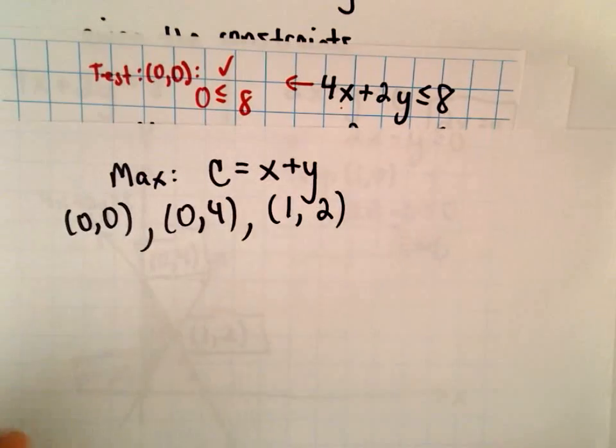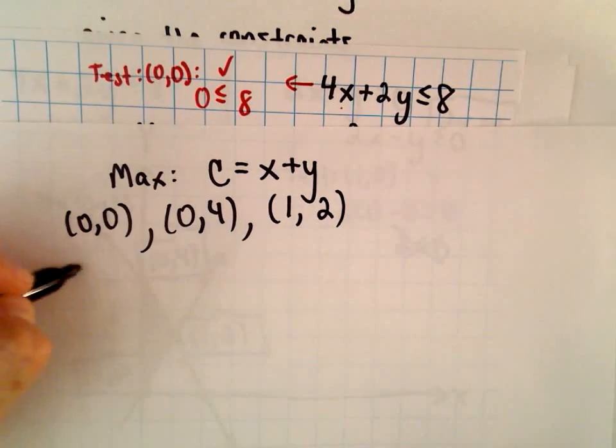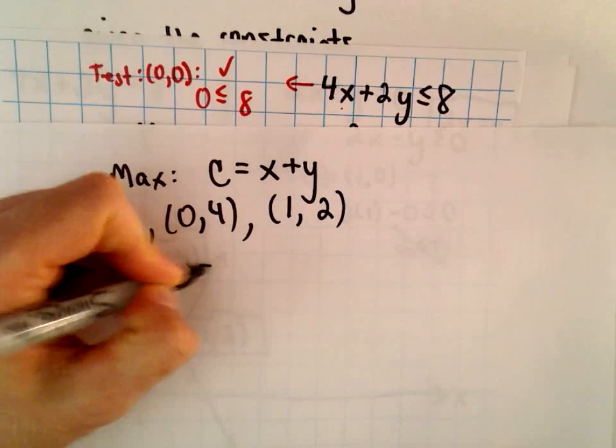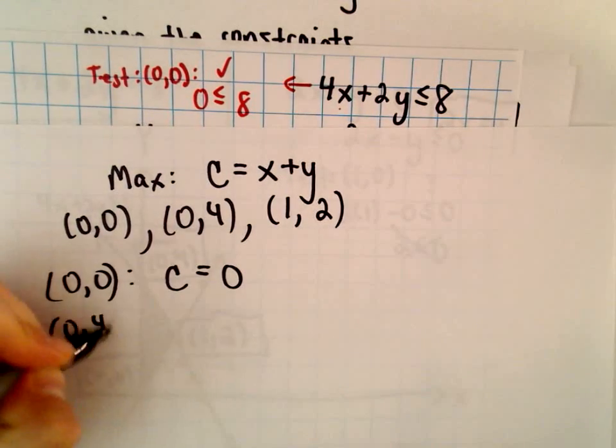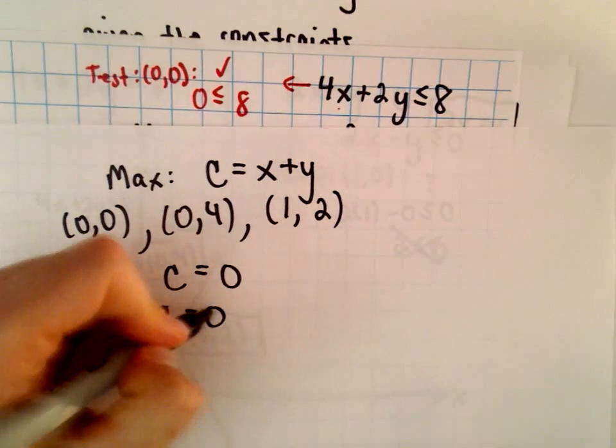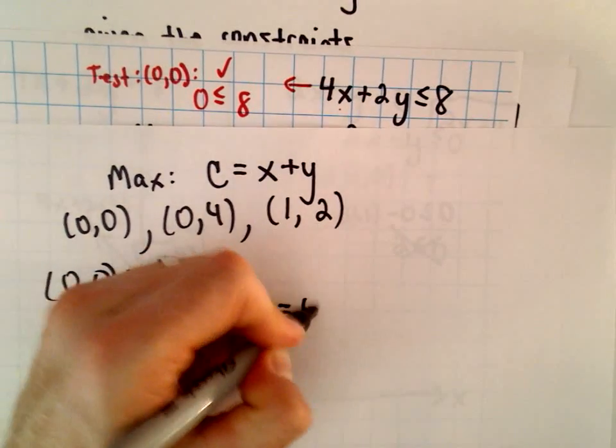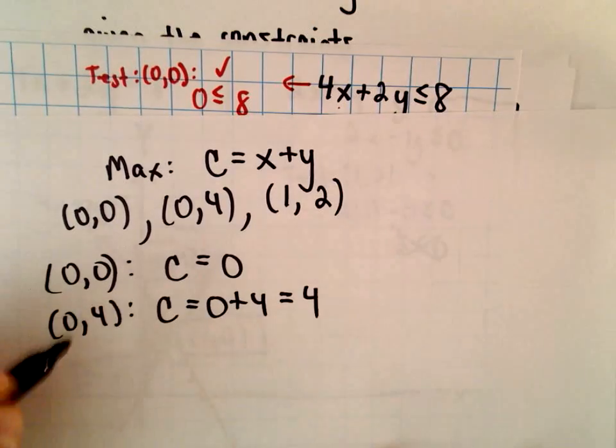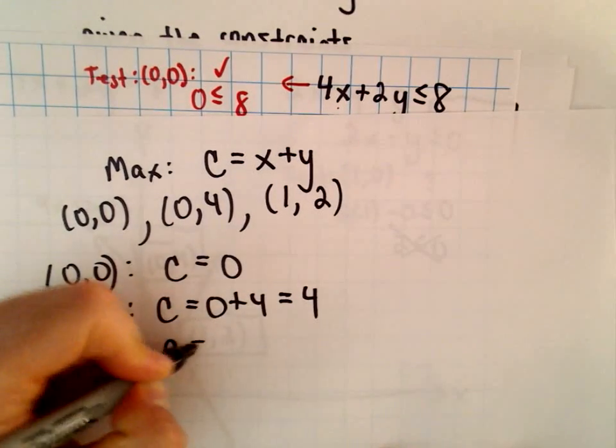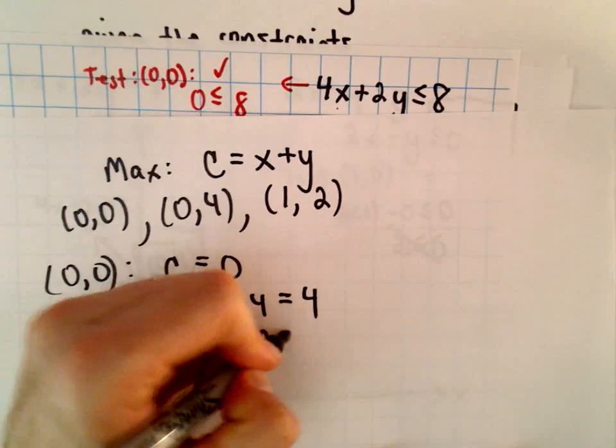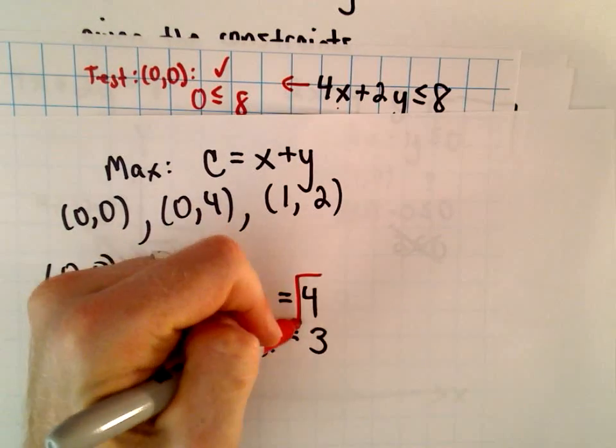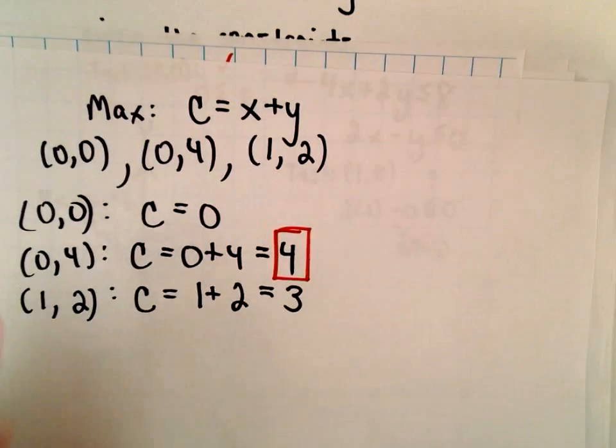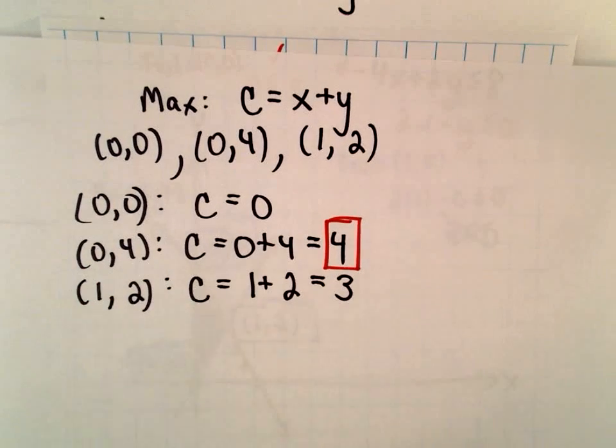Well, the arithmetic here is pretty easy. So clearly if you plug in 0, 0, we'll get that C equals 0, 0 plus 0. If we put in 0, 4, we'll get that C equals 0 plus 4, or we'll get the value of 4. And if we plug in 1, 2 into our function, we'll get 1 plus 2. Well hey, that only gives us 3. So it says the maximum value possible will be the value of positive 4. And that's going to occur at the point 0, 4.